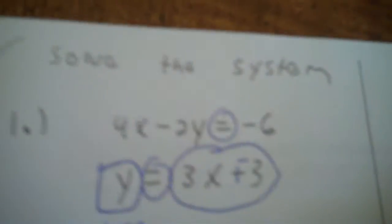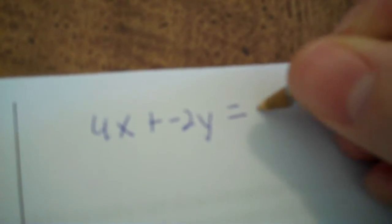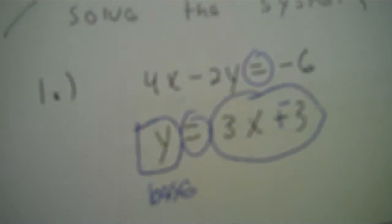Put plus negative there if you can. Now write your off base: 4x plus negative 2y equals negative 6. So y is the base, so you parenthesize y.